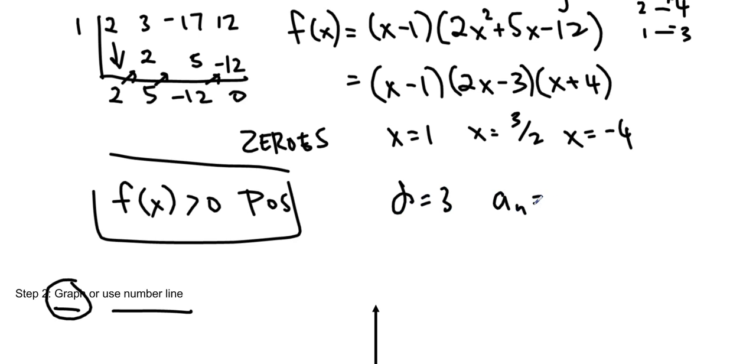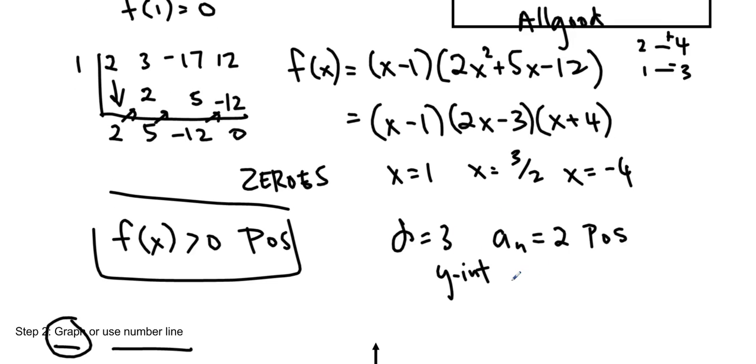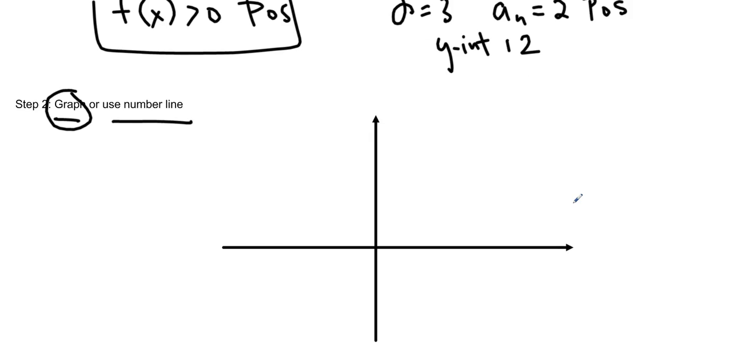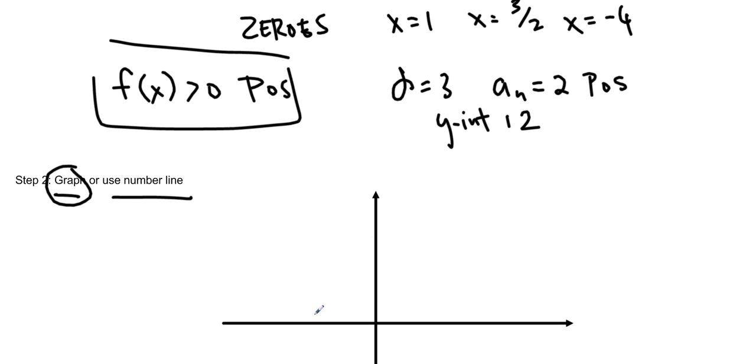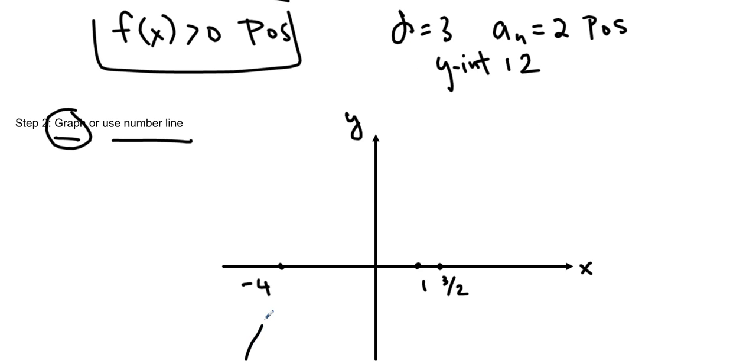We can look at that equation, and we know that the degree is 3, and the leading coefficient is 2, so it's positive. We also know the y-intercept was 12. So I can graph this, and then I'm going to see where it's positive and where it's negative. We'll put -4 here, 1 here, and 3/2. It's not to scale. These all have order 1, and I have a positive leading coefficient with an odd degree, so it's going to start at the bottom and go upwards. We'll just graph it like that to look something like this.